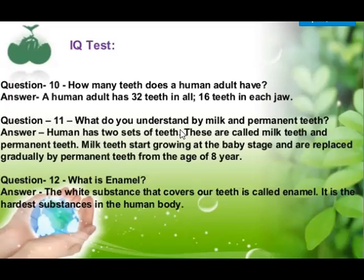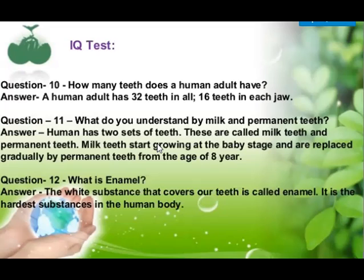What do you understand by milk and permanent teeth? Humans have two sets of teeth in their life. The first set grows after the age of six to eight months and they are known as milk teeth. They start falling when the child reaches the age of six to eight years. The total number of milk teeth is 20.